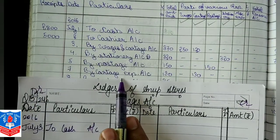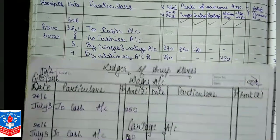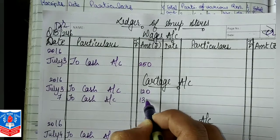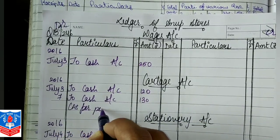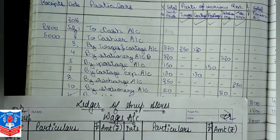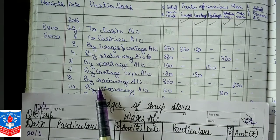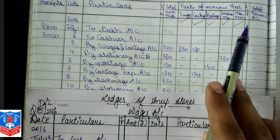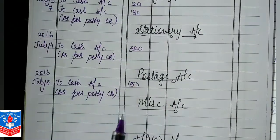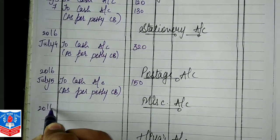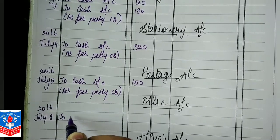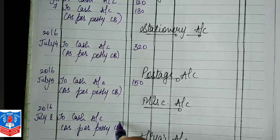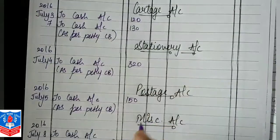Moving further, next is again cartridge expense on date 7, amount 130. In cartridge account: 2016 July 7, To Cash Account, 130 — and write as per petty cash book. After 7th is date 8 — that is recharge or you can use miscellaneous. Check the miscellaneous column, it is 250. In miscellaneous account on debit side: 2016 July 8, To Cash Account, as per petty cash book, amount 250.